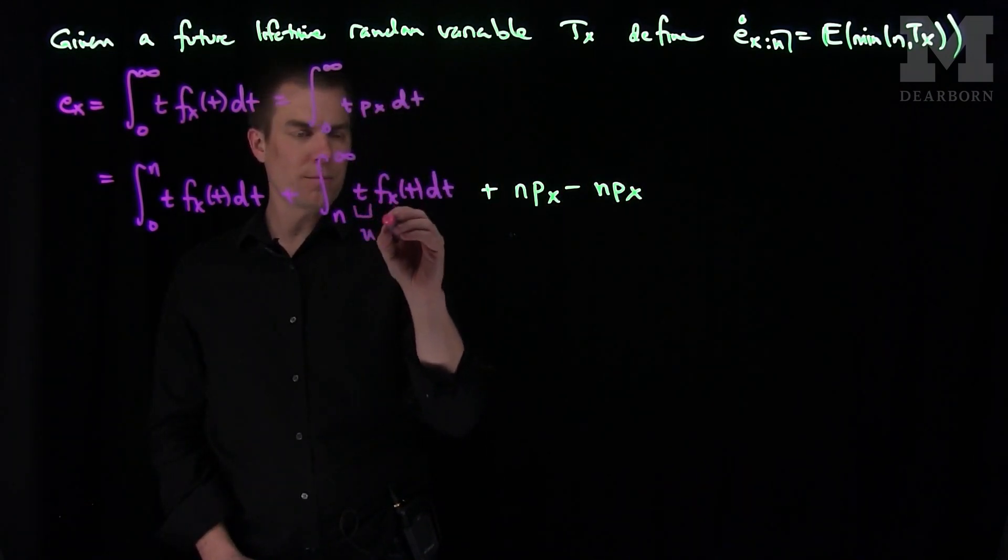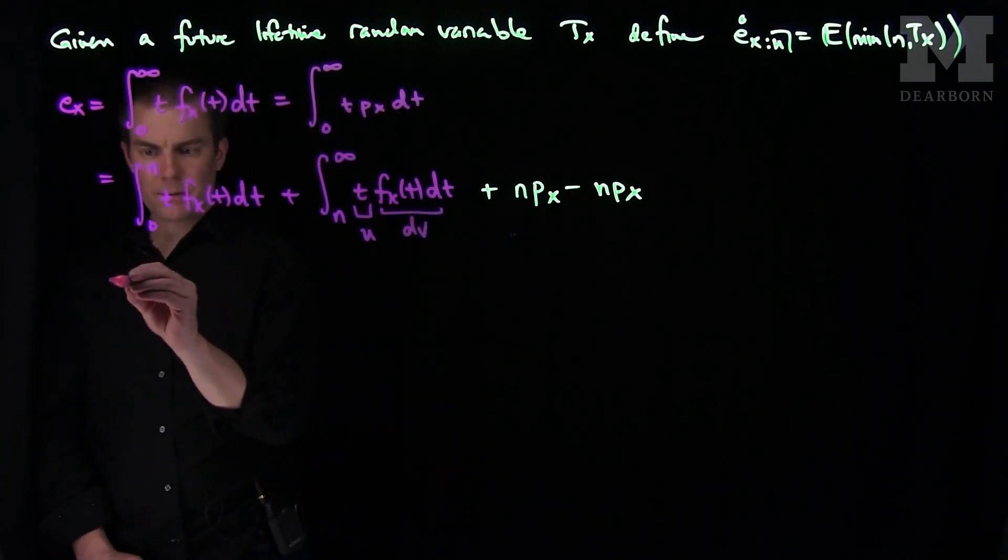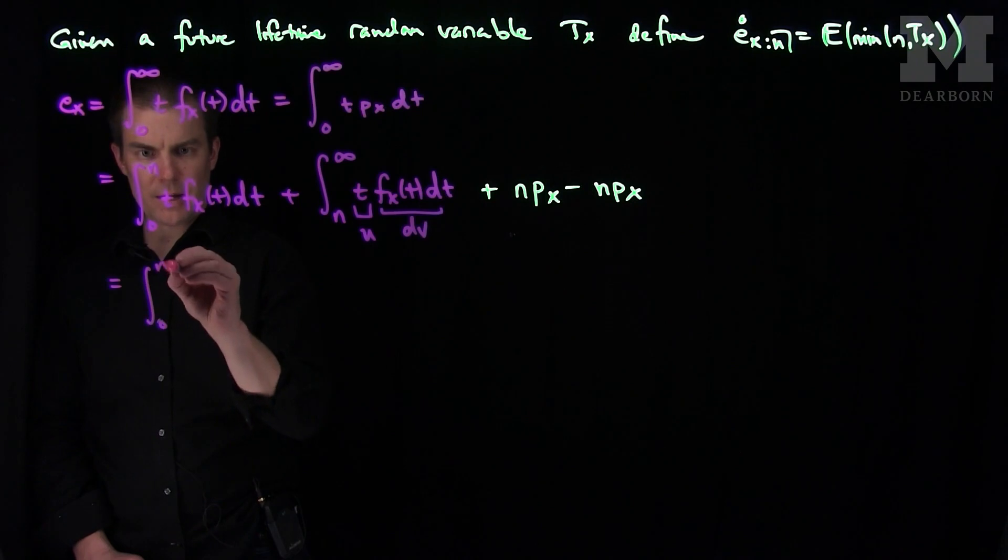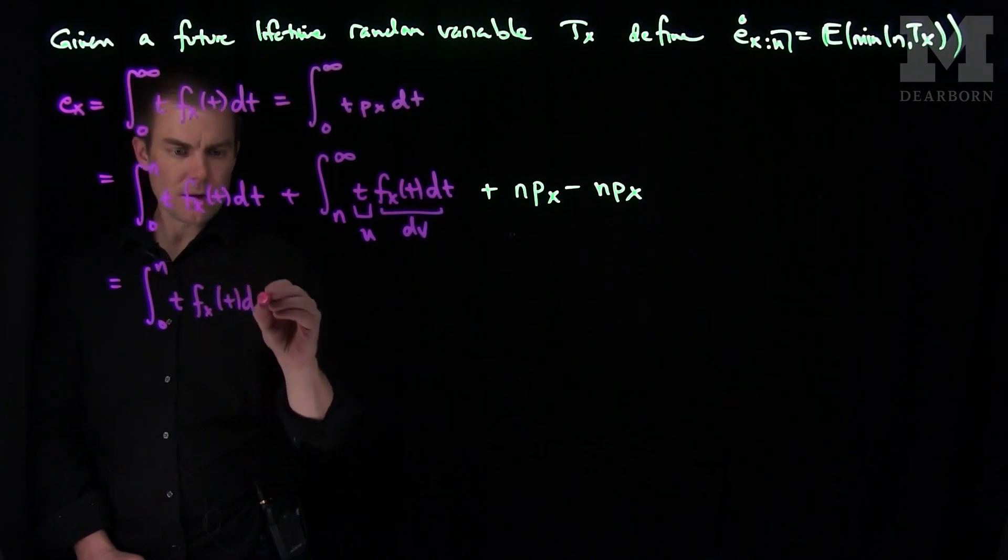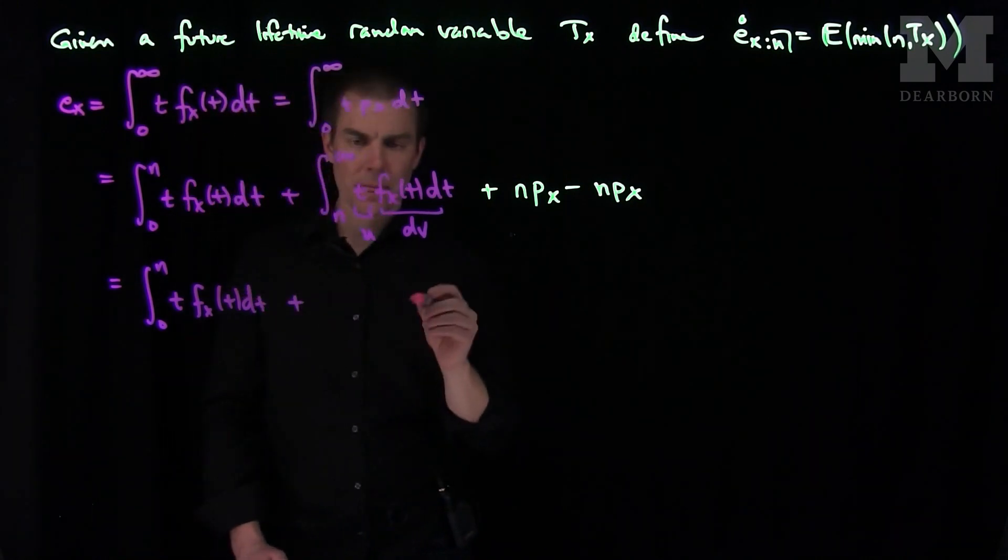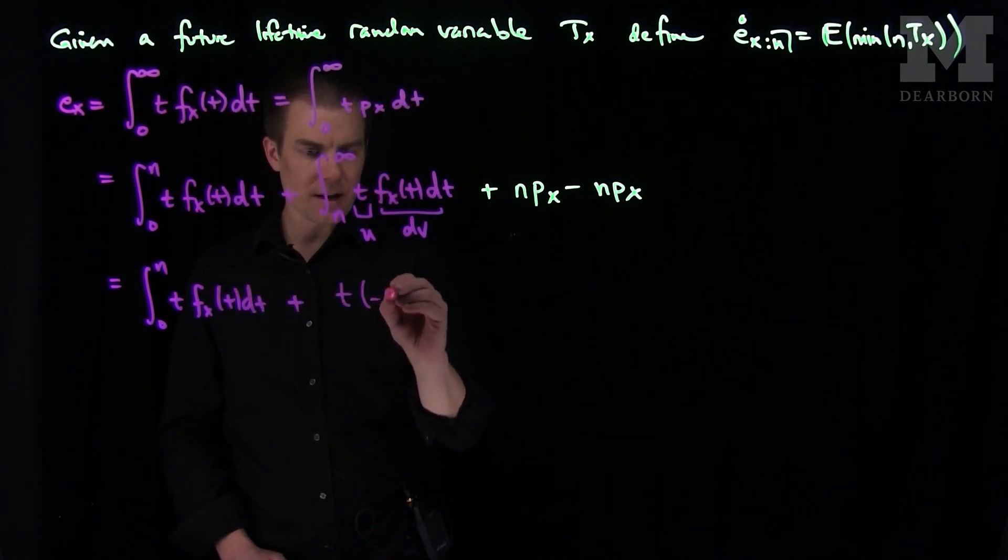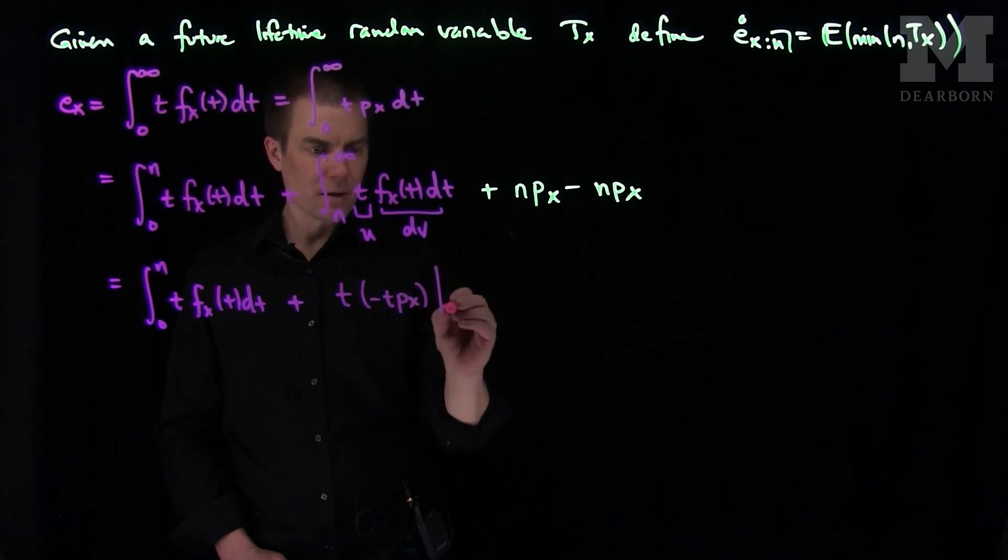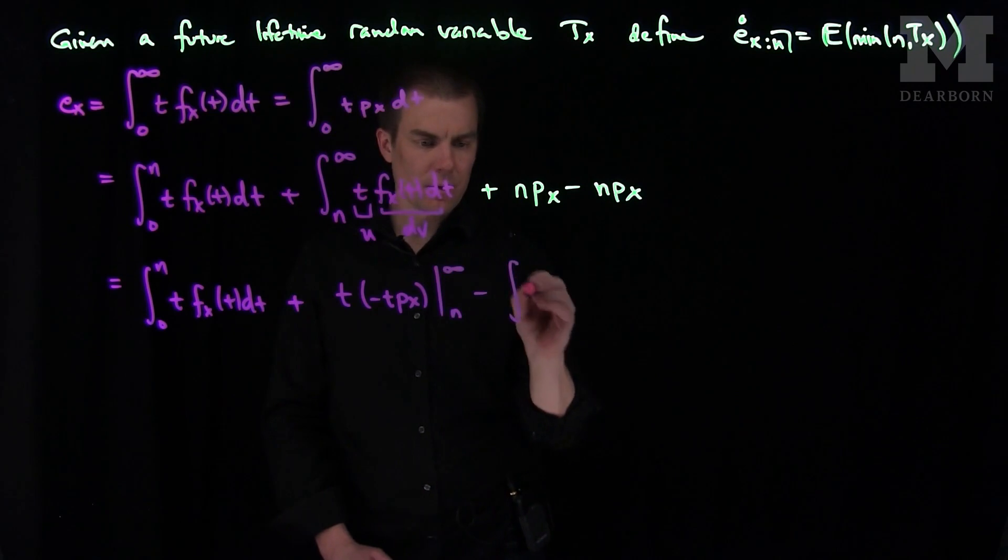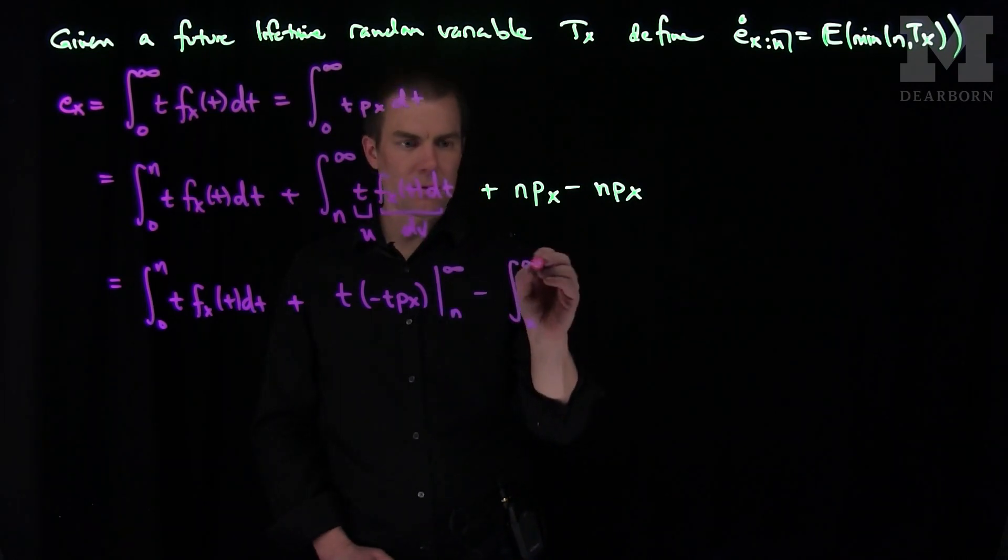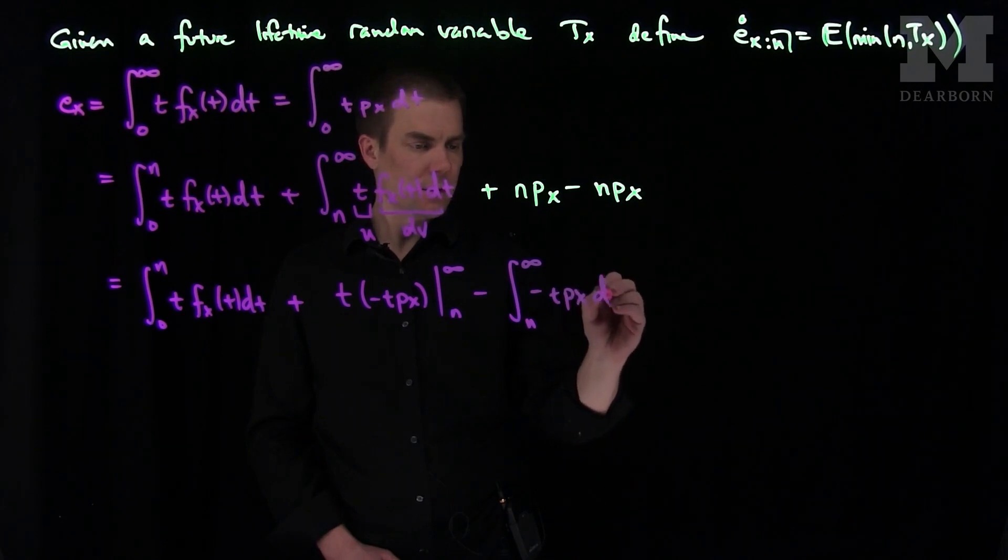And so now what we'll do is we'll integrate by parts on this expression. We'll call this our u and this our dv. So integrate by parts, the first integral will remain integral from 0 to n of t f(x,t) dt. Plus, I'll have a u times v, so I'm going to have a t times negative tpx from n to infinity. And then minus the integral from n to infinity of a negative tpx dt.